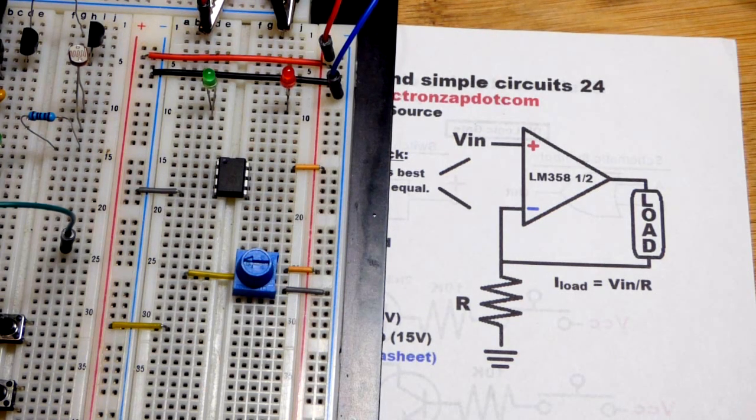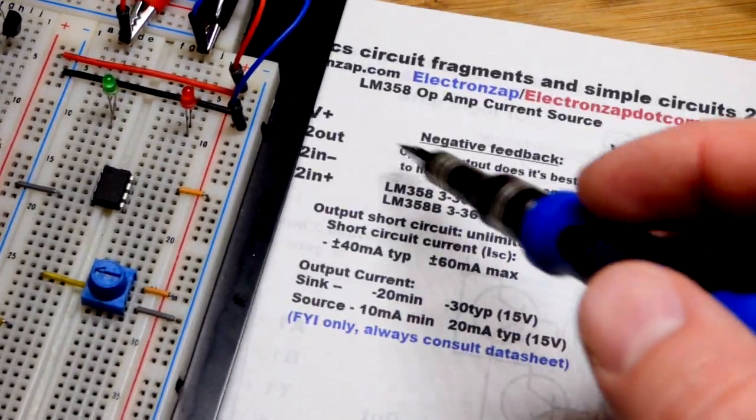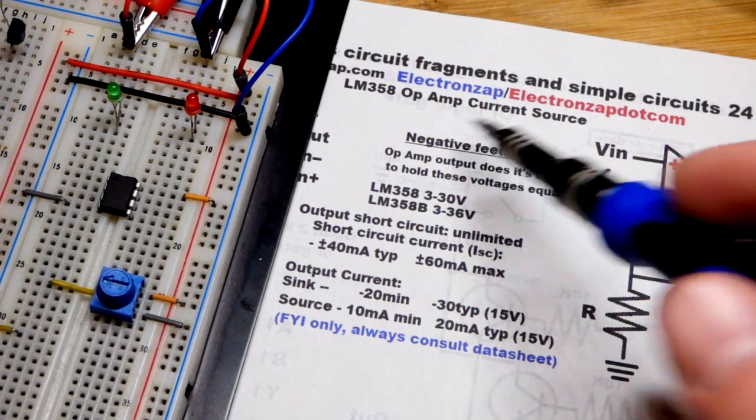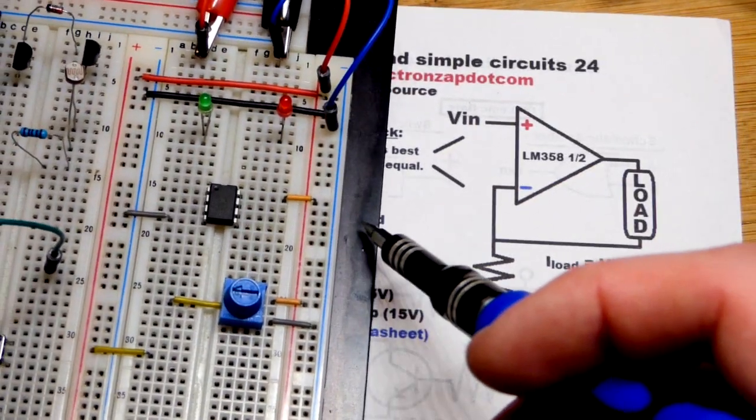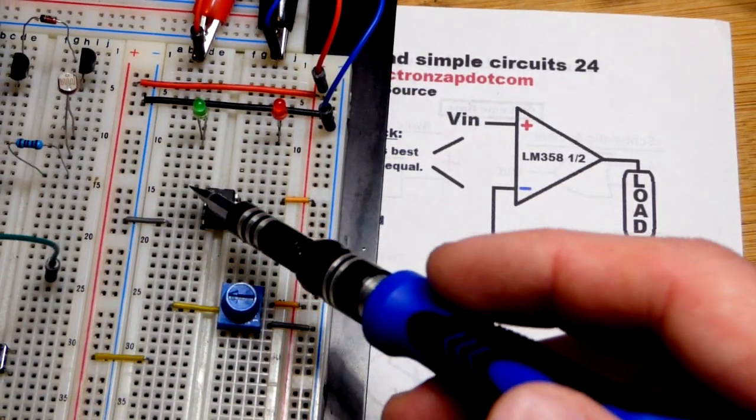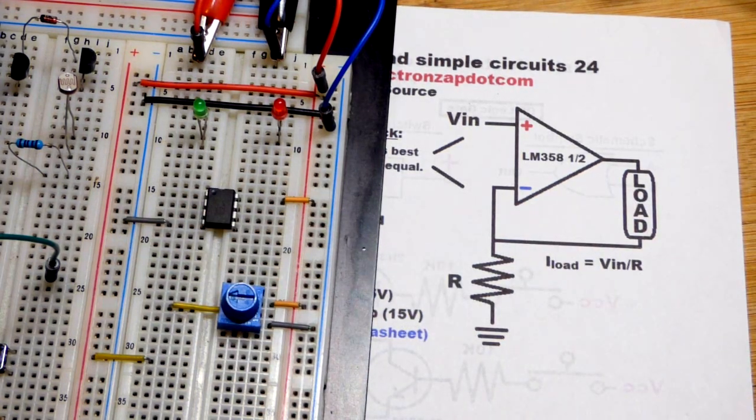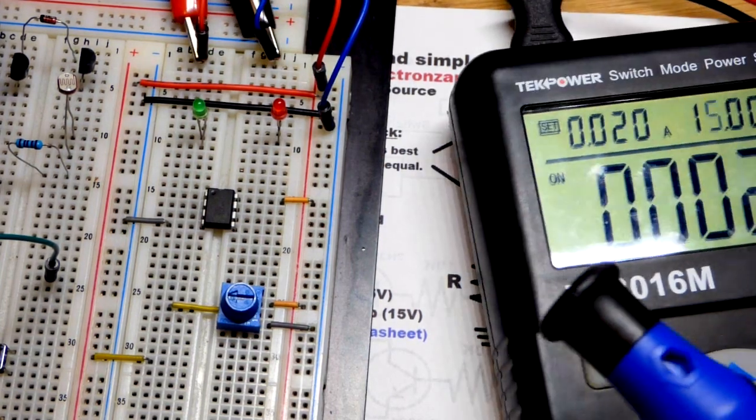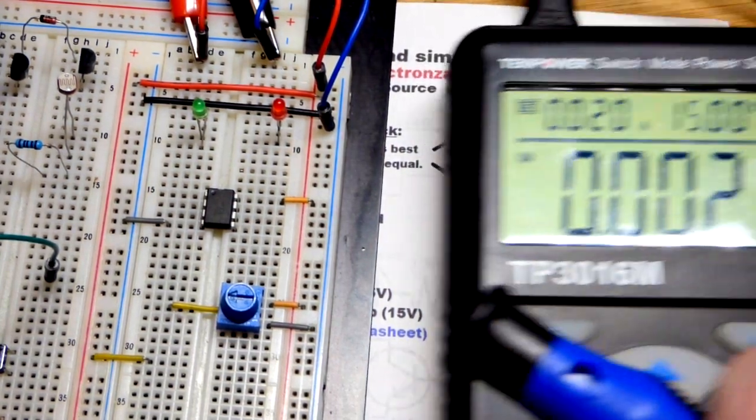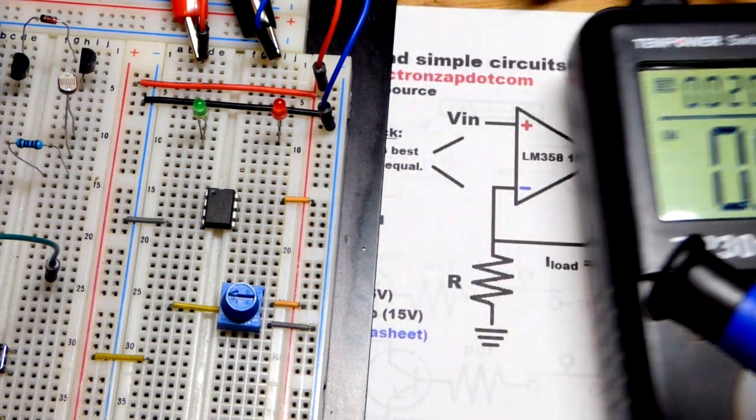In this video, we're going to make a current source with an LM358 op amp. The nice thing about this op amp is the output will go all the way to the negative rail, so we can use a single supply, which is just a regular DC power supply set at 15 volts right now.